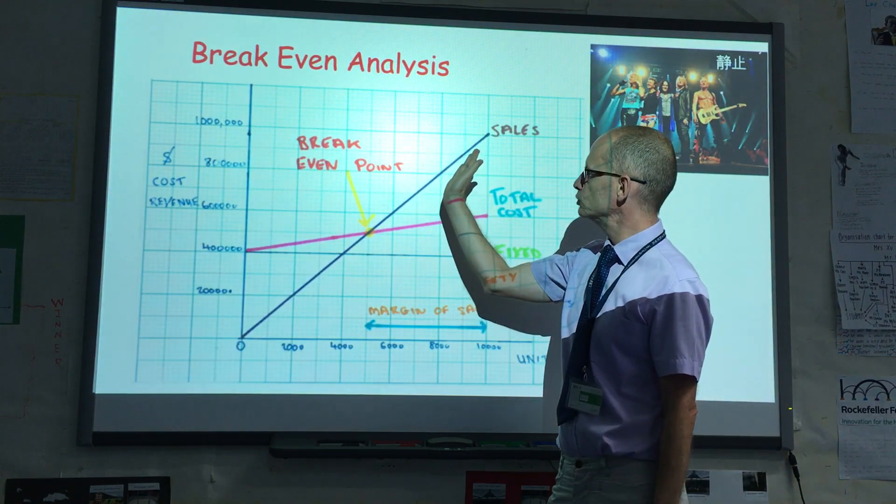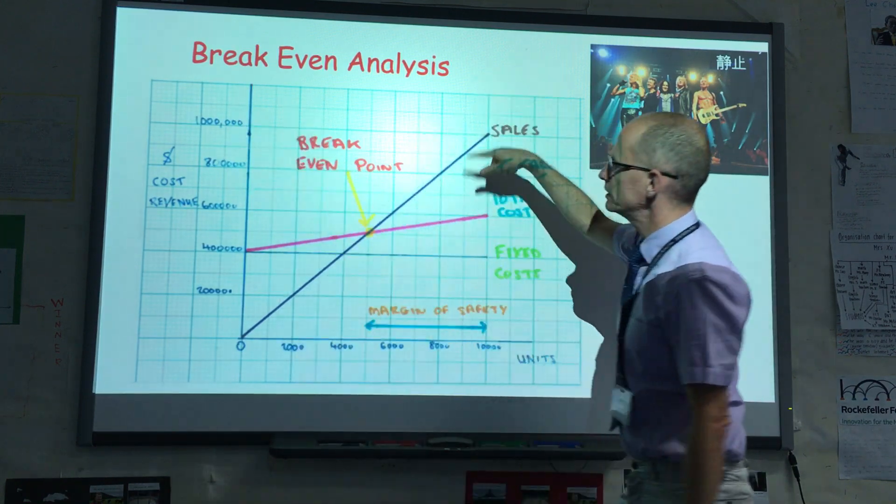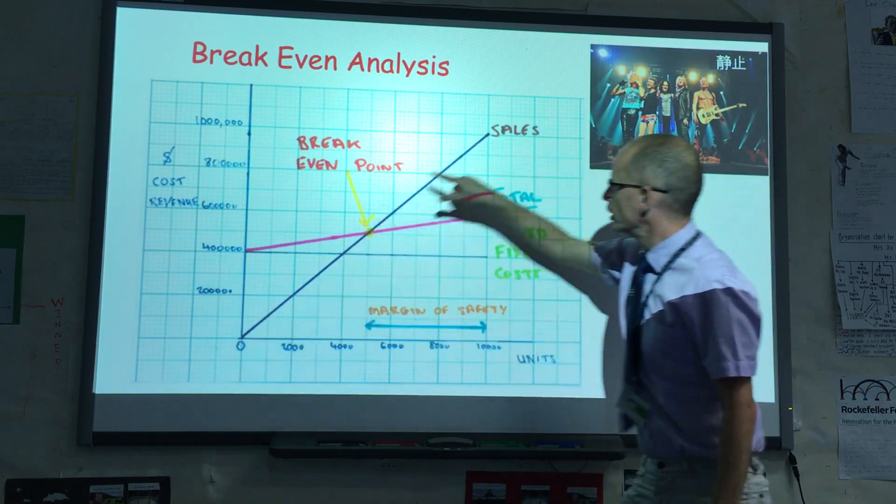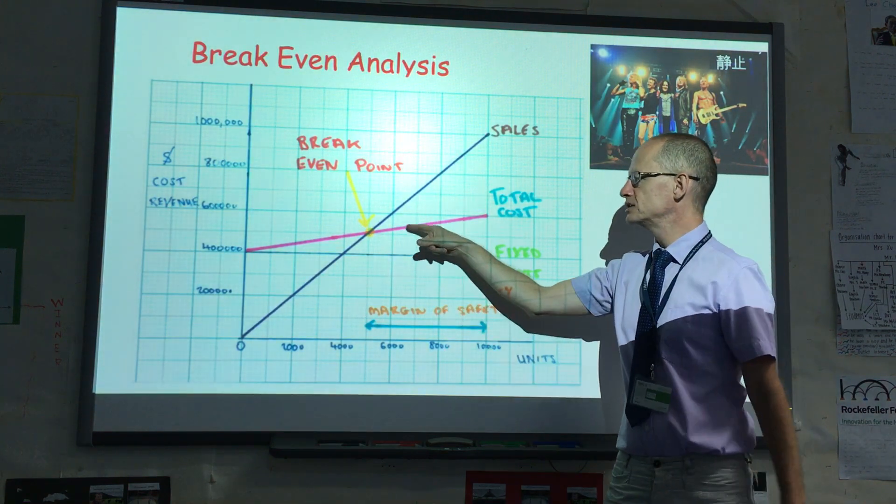So if we increase the selling price, obviously this will move to the left, and we'd introduce like $1.2 million up here. If we reduce the selling price, say $80 a ticket, obviously the sales line would now go to here, and the break-even point would move in this direction.